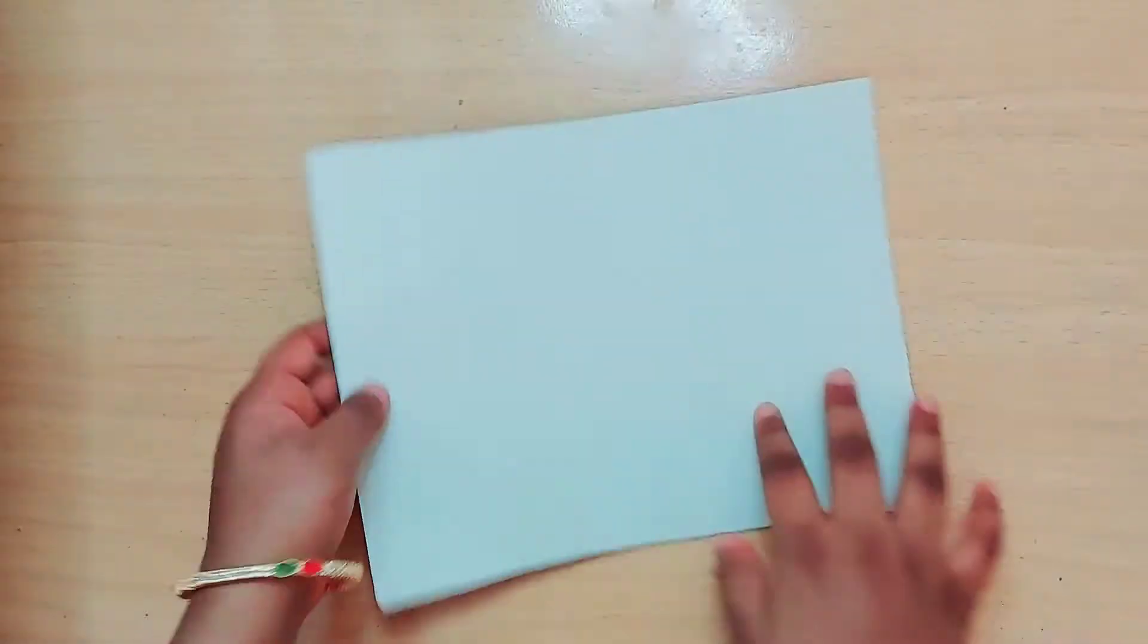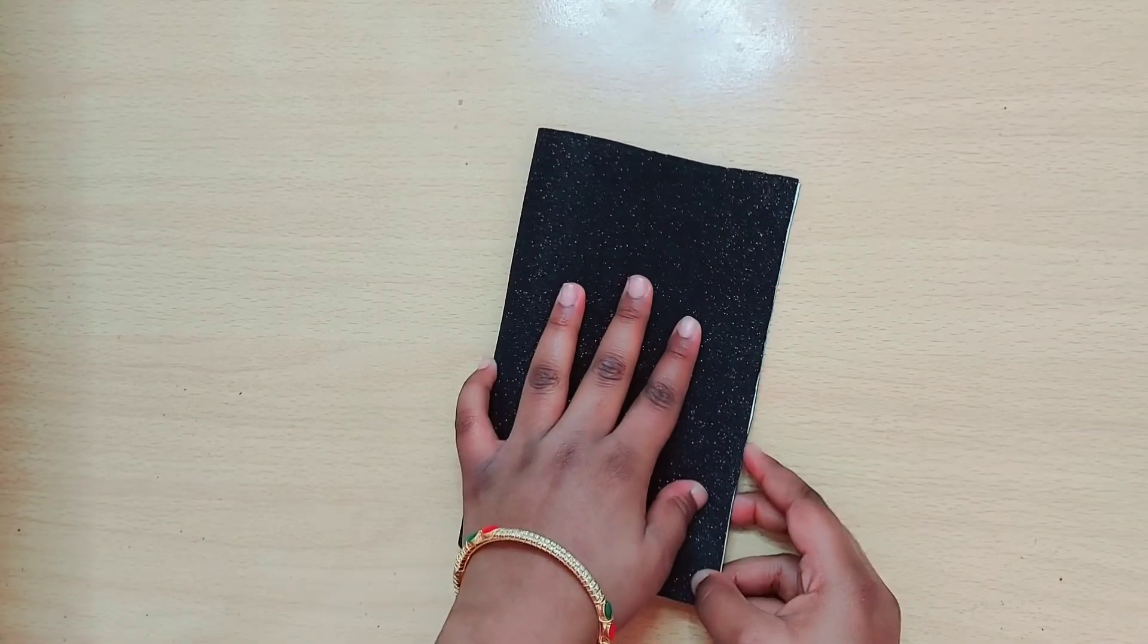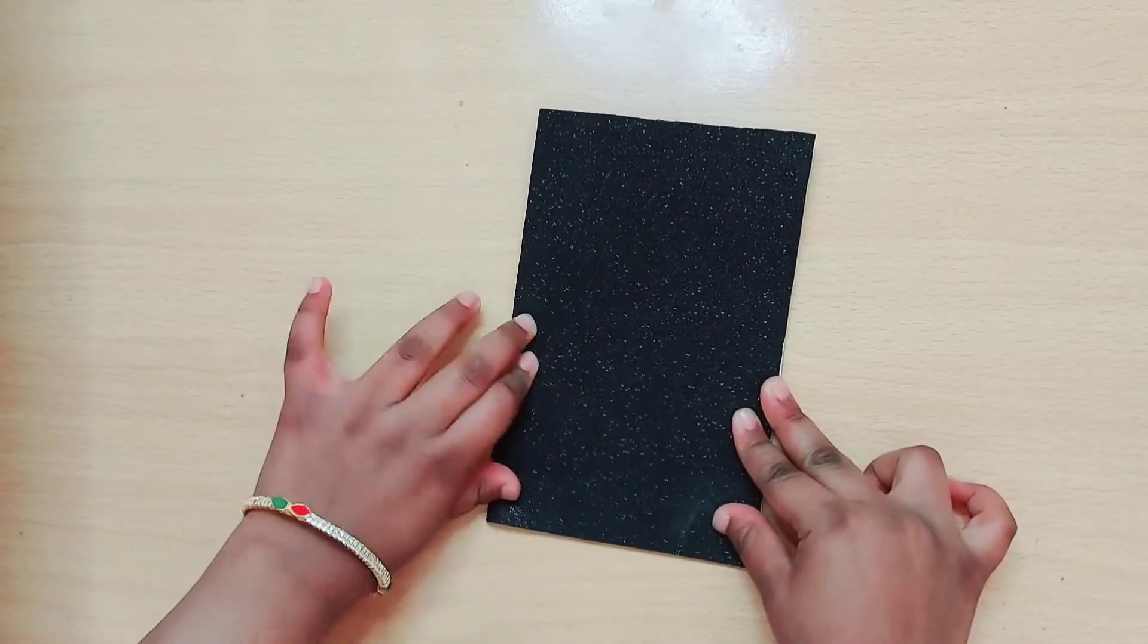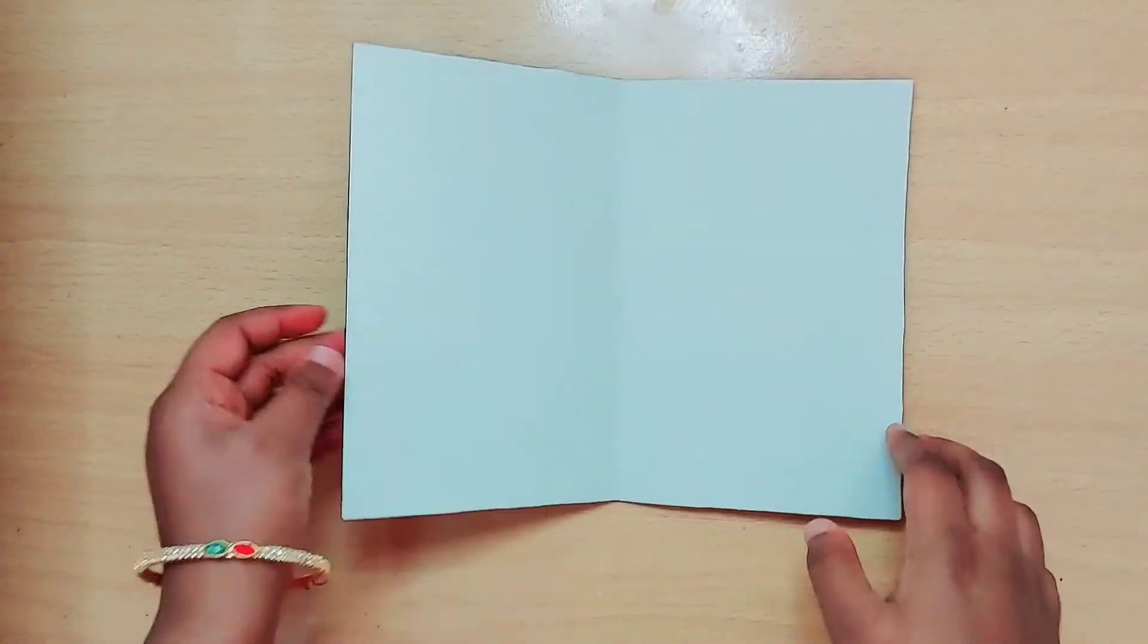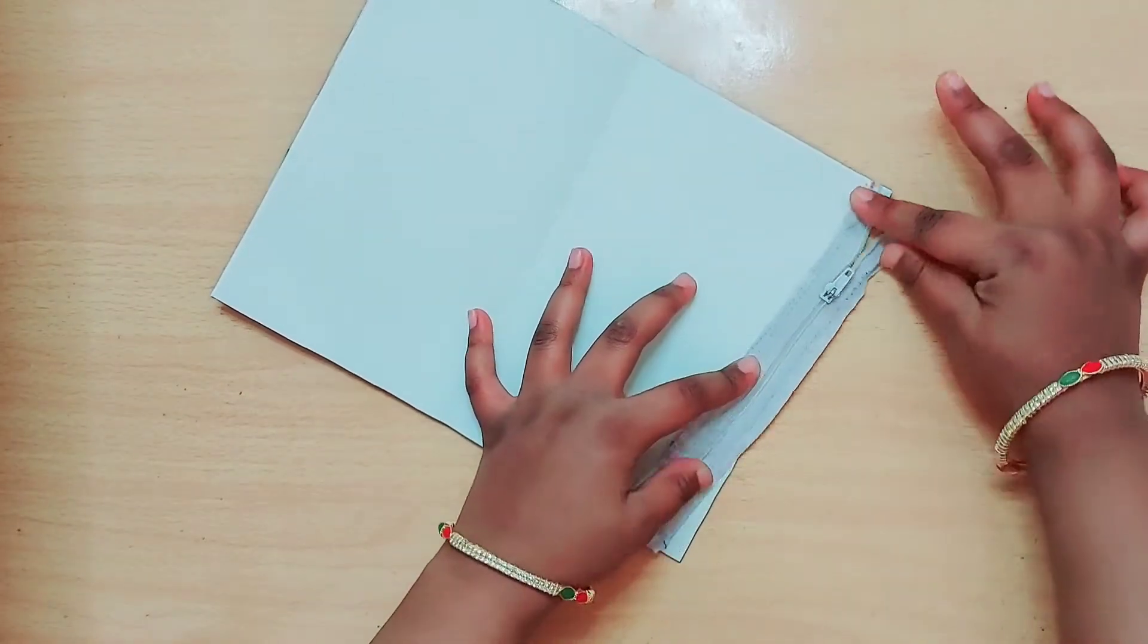First, to make a pouch we need glitter paper in your favorite color. Here I am using black. Now fold the glitter paper in half as shown. After folding it in half, we need a zip to make the pouch.